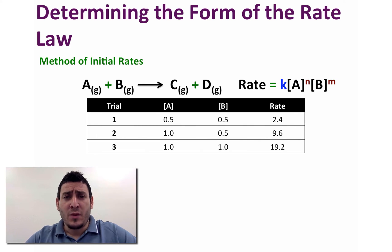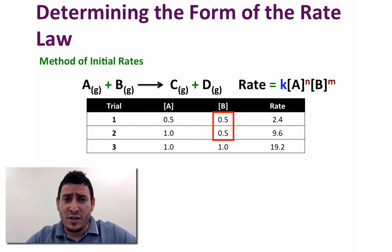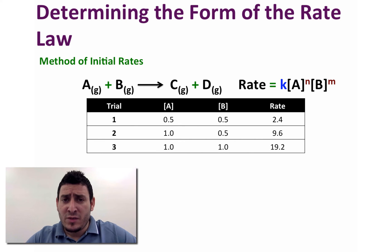That's why we usually run three different reactions where each time we fix the concentration of one reactant and change the concentration of the other. For trials 1 and 2 we fixed the concentration of B and changed the concentration of A, measuring the reaction rate of each trial. Similarly, for trials 2 and 3 we fixed the concentration of A and changed the concentration of B.